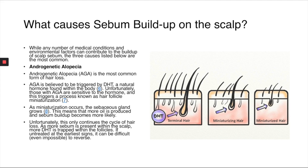There are a number of things that can cause sebum buildup. The first and most common is androgenetic alopecia, or AGA, which is believed to be triggered by dihydrotestosterone (DHT), a natural hormone found within the body. Those with androgenetic alopecia are sensitive to DHT, which can trigger hair follicle miniaturization. As miniaturization occurs, the sebaceous gland grows, meaning more oil is produced, and more DHT becomes trapped within the hair follicles, continuing the cycle of hair loss.